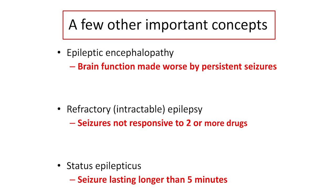Because of Rett syndrome and CDKL5, there are a few other concepts important for our discussion today. One is epileptic encephalopathy — encephalopathy, or brain dysfunction, related to the seizures themselves. The more seizures that happen, maybe the worse the cognition gets. When a child has intractable or refractory epilepsy, it may be partly from having an encephalopathic or underlying brain disorder.